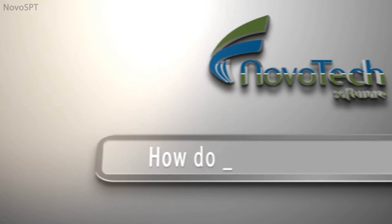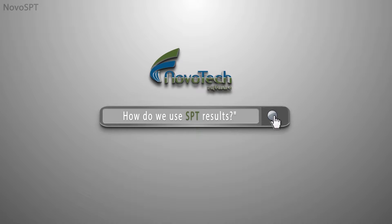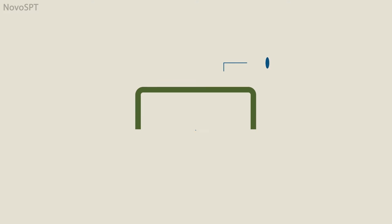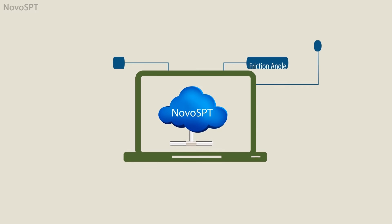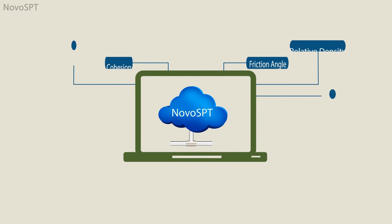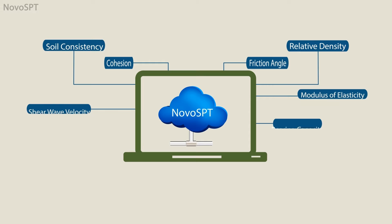How do we use SPT results? The SPT blow counts recorded during field investigation are converted to N60 and N160. These are used by geotechnical engineers to estimate various soil properties.